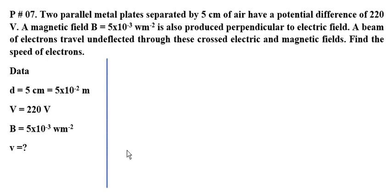वी मालूम करनी है. तो हमें यहां पे concept इस्तमाल करना है कि electric field और magnetic field दोनों एक दूसरे का effect cancel कर रही है. जो भी magnetic field force लगा रही है उसको electric field balance कर रही है, या electric field force लगा रही है तो उसको magnetic field balance कर रही है. Balance सिरफ उसी condition में किया जा सकता है जब magnitudes दोनों field के equal हों. Solution में हम सबसे पहले यही लिखेंगे कि electric field के force का magnitude और magnetic field के force का magnitude दोनों equal है.